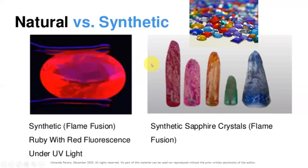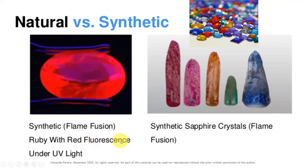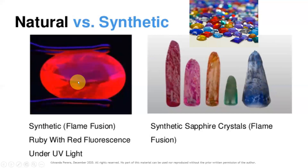The method used is flame fusion — that is how synthetic stones are created inside the lab. This synthetic ruby shows red fluorescence under UV light — ultraviolet light. The red fluorescence is more intense than that of a natural ruby. So that is one identifying characteristic.